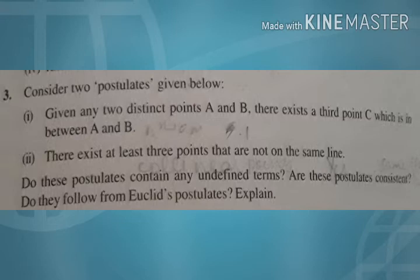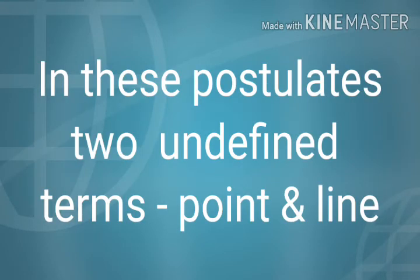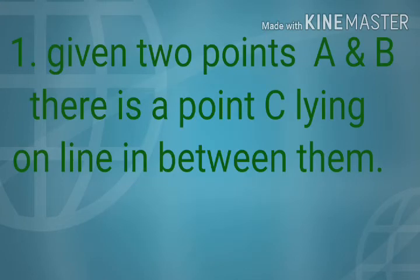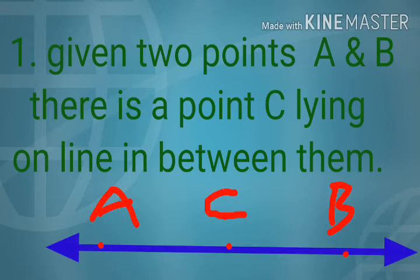Here in these postulates, two terms are undefined. The two undefined terms are 'line' and 'point'. Both the postulates are consistent because they represent two different situations. First one says that given two points A and B, there is a point C lying on the line in between them.